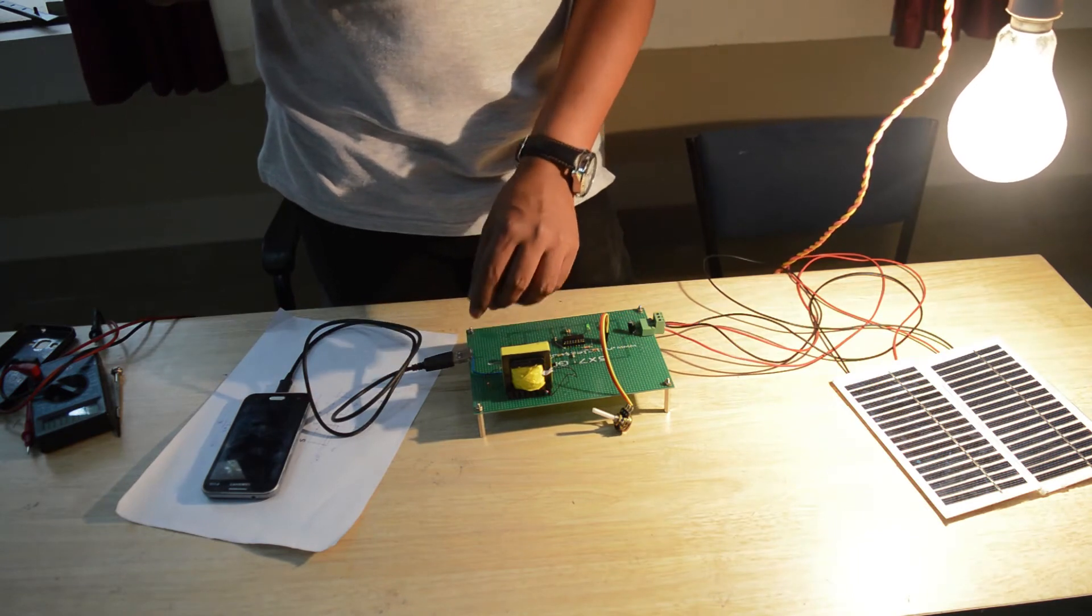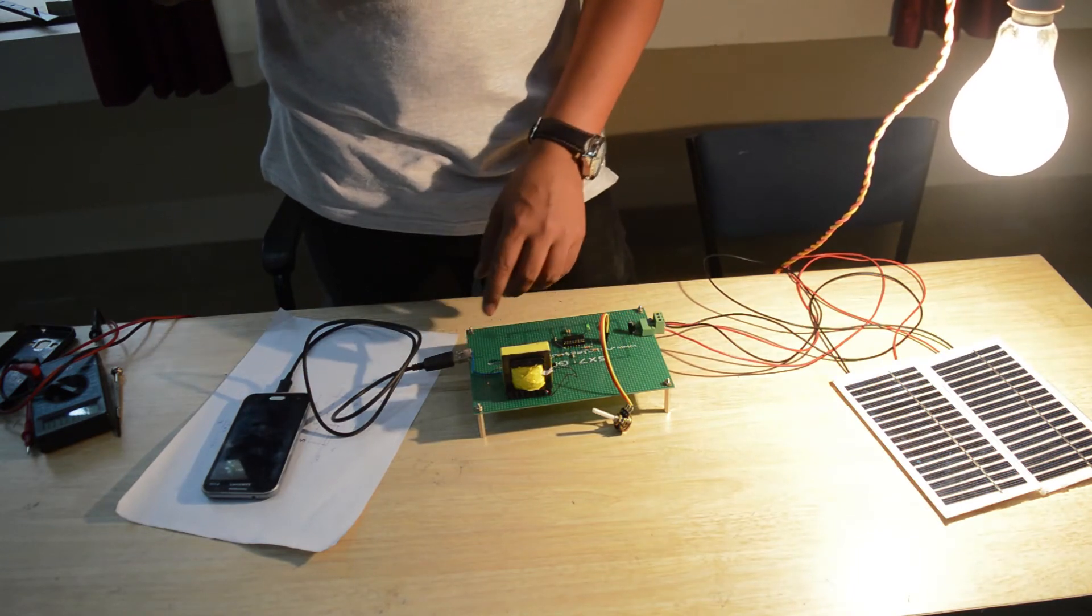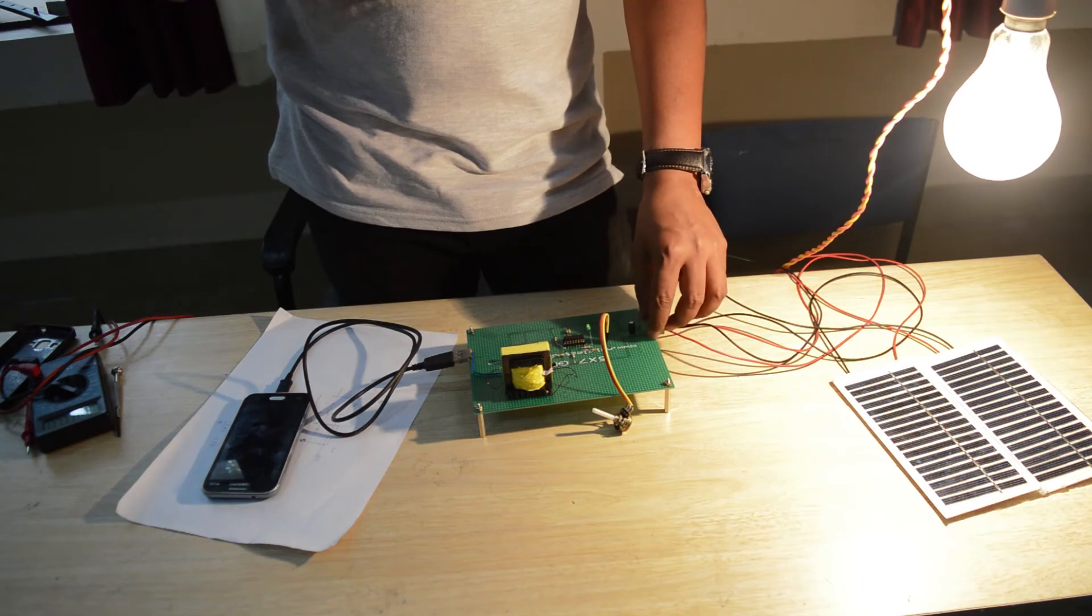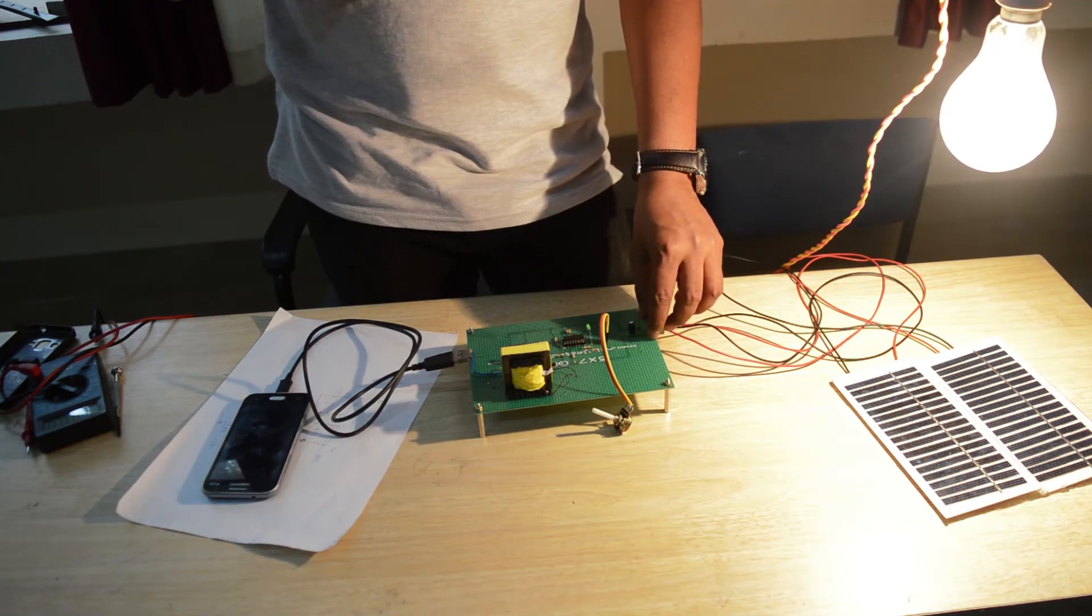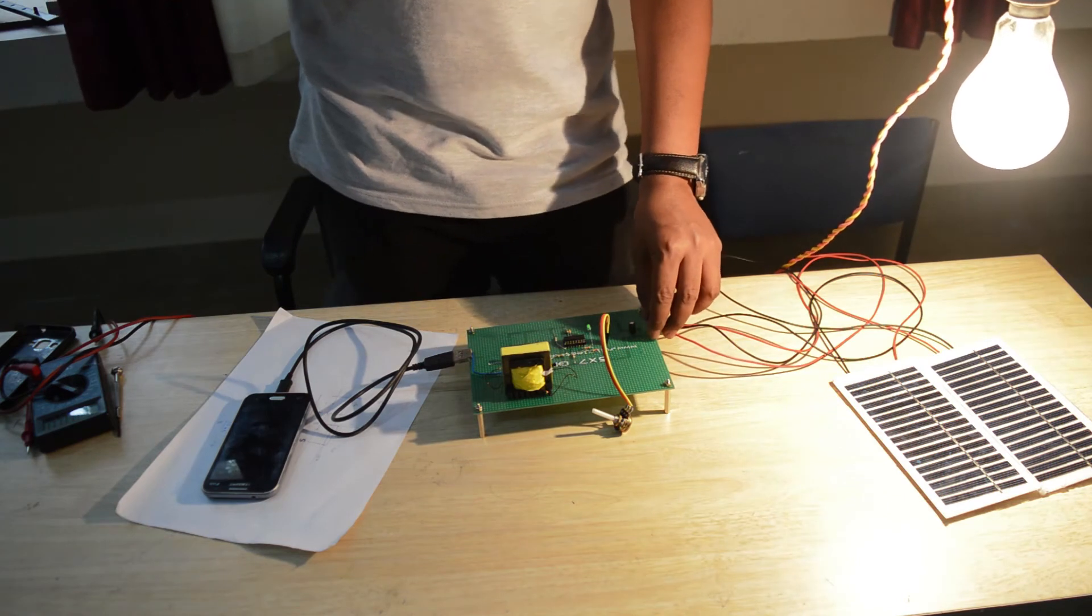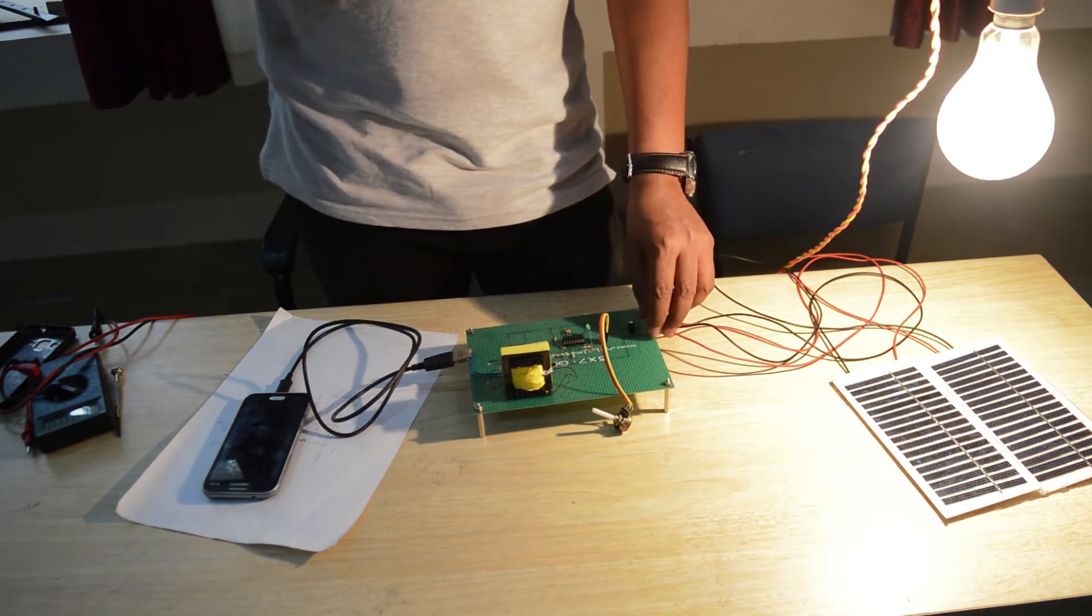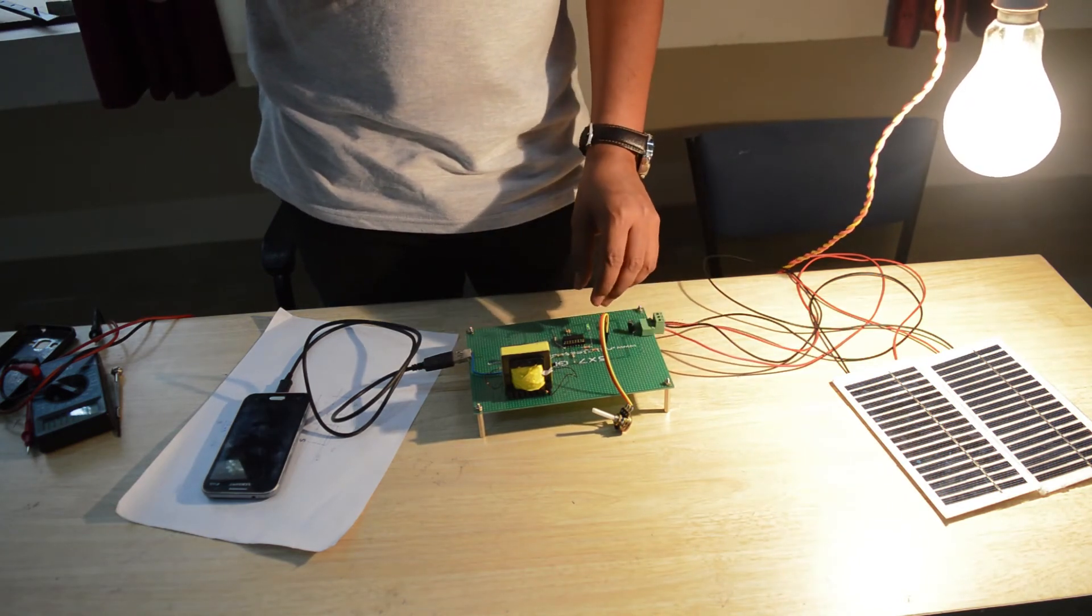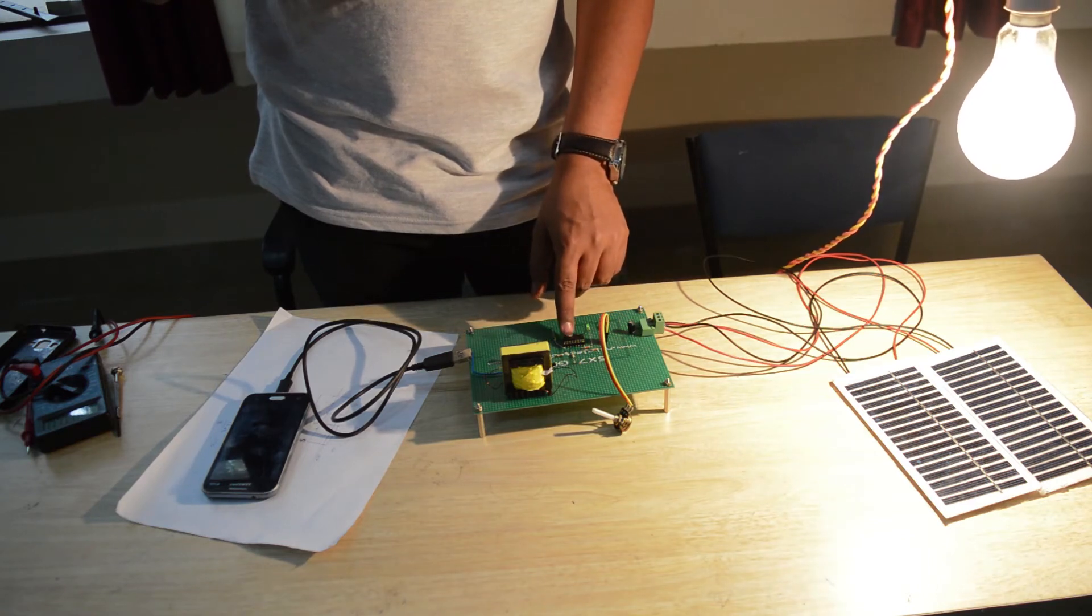To get an output of 5 volts, we have to control the duty cycle of the buck converter. The buck converter duty cycle is controlled by this IC, the TL494 IC which we have here.